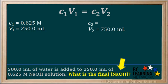What we're asked to find in this problem is the final concentration of NaOH. The final concentration of NaOH is C2, which is our unknown in this case. Since C2 is our unknown, we rearrange the dilution formula to solve for C2. And we get C2 is equal to C1 V1 over V2.